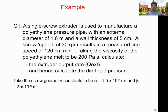Here is an example you can solve using the equations we have learned. A single extruder is used to manufacture a polyethylene pressure pipe with an external diameter of 1.6 meters and a wall thickness of five centimeters. A screw speed of 30 RPM results in a measured line speed of 120 centimeters per minute. Taking the viscosity of the polyethylene melt to be 200 Pascal-seconds, calculate the extrudate output rate — the volumetric flow rate — and hence calculate the die pressure. The screw geometry constants α and β are given. Please try to do this as homework; it will be discussed in one of our online sessions.